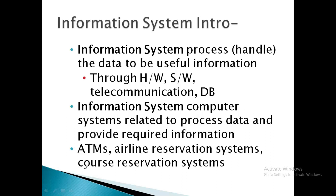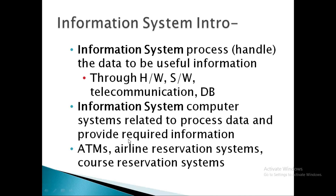For example, ATMs, airline reservation systems, course reservation systems — they are all part of information systems. Because anytime we can check on airline reservation systems ke kaonsi flights are available, at which particular timing and is costing how much. So this is how information is important.